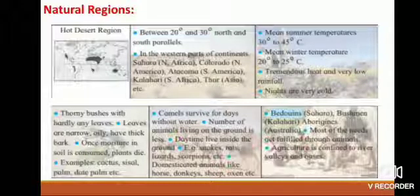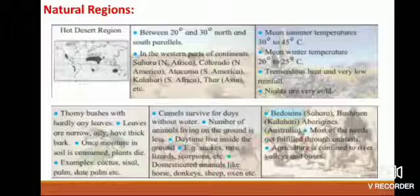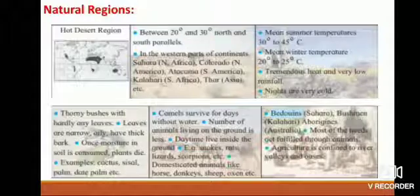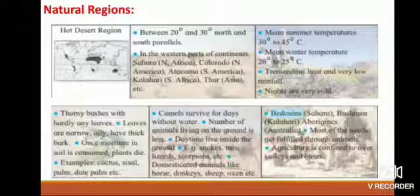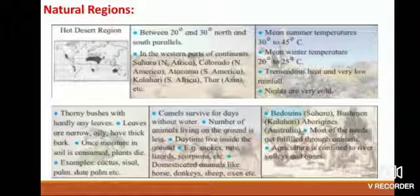Animal life: camels can survive for days without water. The number of animals living on the ground is less; during daytime they live inside the ground — examples include snakes, rats, lizards, and scorpions. Domesticated animals include horses, donkeys, sheep, and oxen. Human life: Bedouins of Sahara, Bushmen, and Aborigines of Australia — most needs are fulfilled through animals. Agriculture is confined to river valleys and oases.